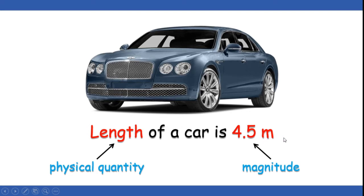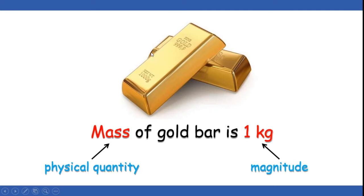So length of a car is 4.5 meters. One more example: I have given an example of a gold biscuit — a gold bar. If you define, mass of the gold bar is 1 kg. Here again there are two attributes: one is a physical quantity and one is the magnitude of that physical quantity. Mass is nothing but a physical quantity of the gold bar, whereas 1 kg represents the magnitude of that physical quantity.